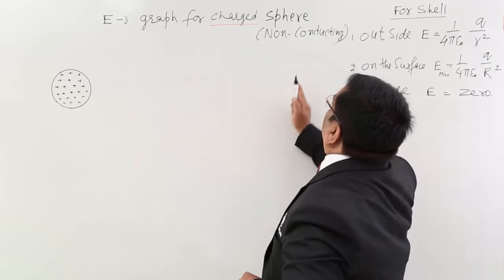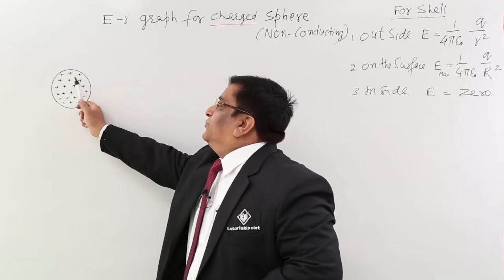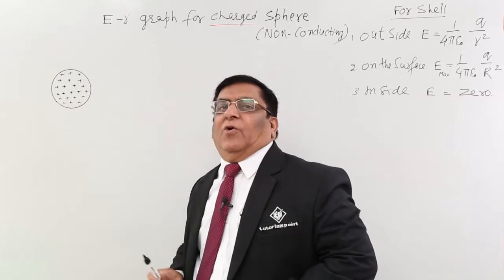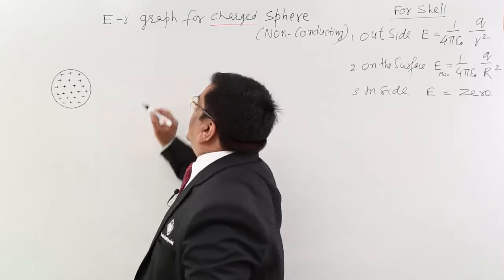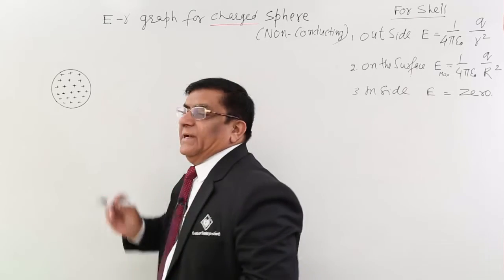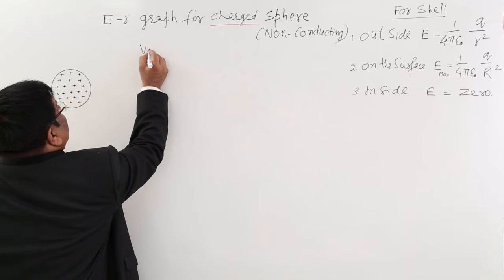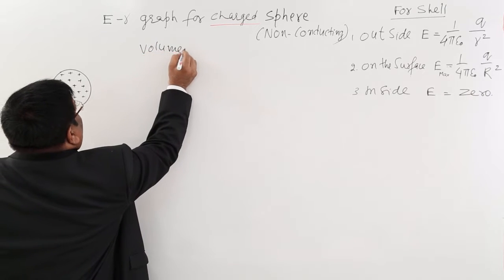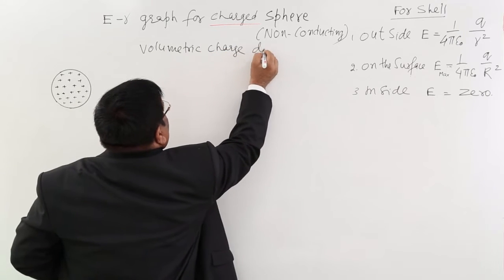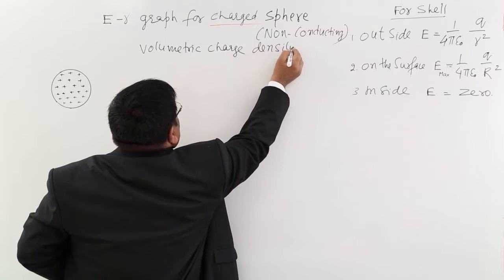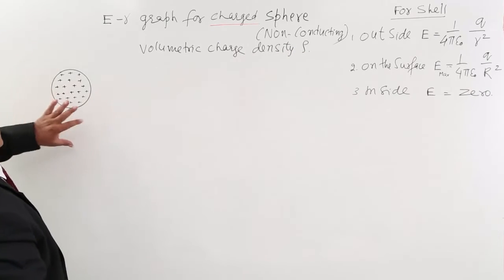So if it is a non-conductor sphere, we assume that charge is distributed all over the body and for this there is a volumetric distribution. We will say that there is a volumetric charge density and that is rho per unit volume everywhere.